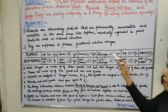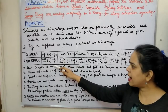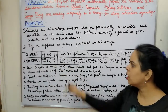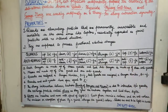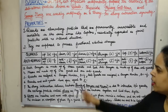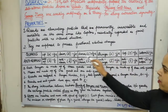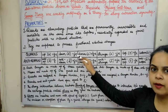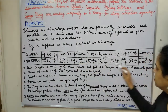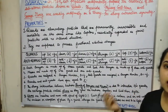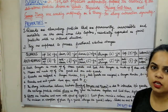Up, charm, and top are having a fractional charge of positive 2/3 of e, whereas the anti-up, anti-charm, and anti-top are having a fractional charge of minus 2/3 of e. Similarly, down, strange, and bottom are having a fractional charge of negative 1/3 of e, and the anti-down, anti-strange, and anti-bottom are having a charge of positive 1/3 of the electronic charge.